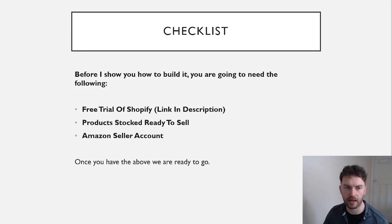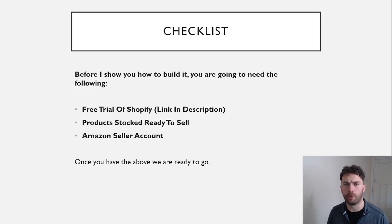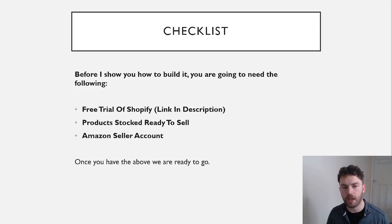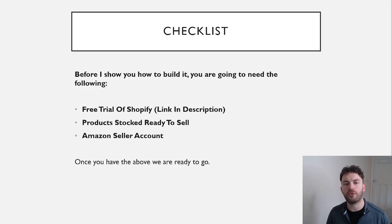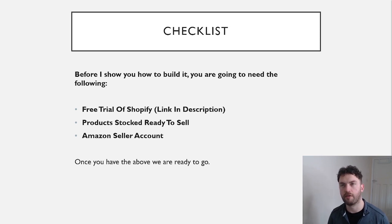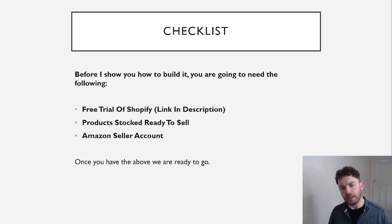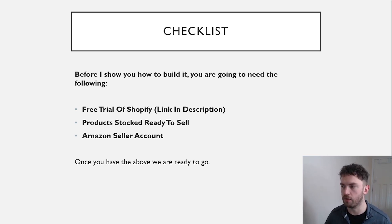So to start things off, I've just created a checklist. Before I show you how to actually build your Shopify store, you're going to need the following things. First of all, you're going to need a free trial of Shopify — there's a link in the description below. If you have already got Shopify, you can just use this video as a useful resource. Bear in mind, if you do use my link I will make a commission. Next up, you're going to need products stocked and ready to go, or at least on the way into Amazon FBA. Lastly, you're going to need a professional Amazon seller account.